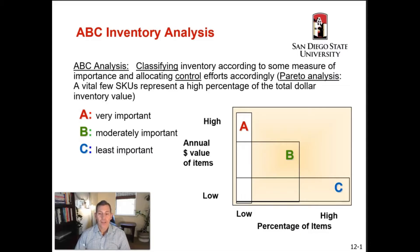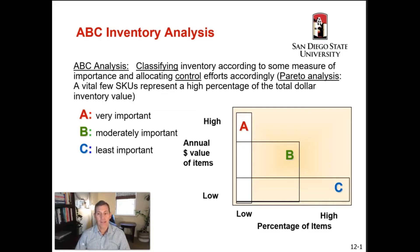You're going to have the most amount of C items, a middle amount of B items, and the least amount of A items when it comes to the total number of items classified in your system. The idea with ABC analysis is to establish inventory policies and controls that focus resources on the few critical inventory parts and not the many trivial ones.